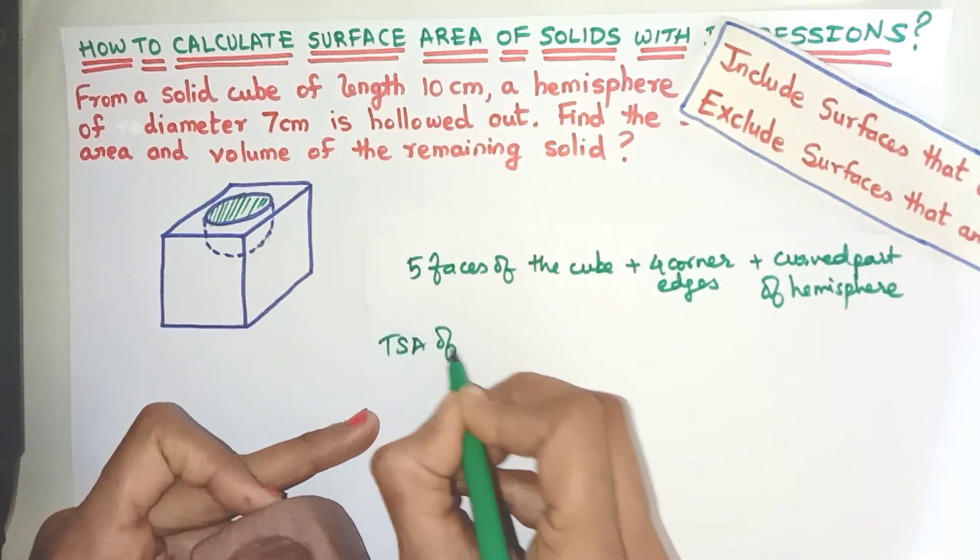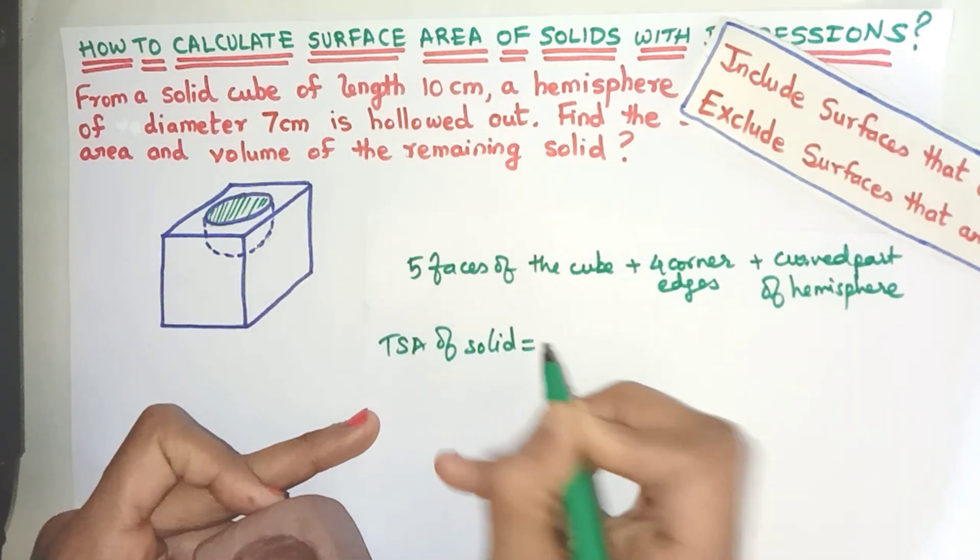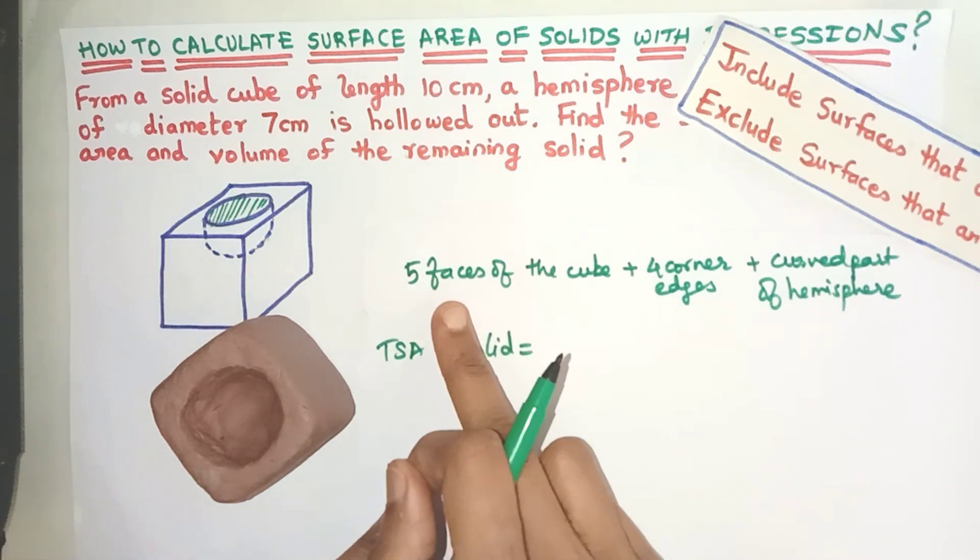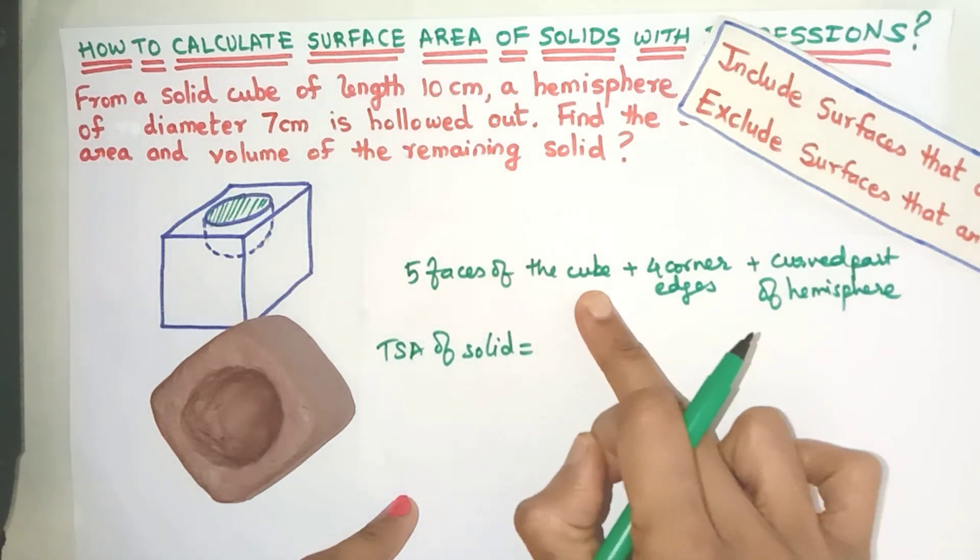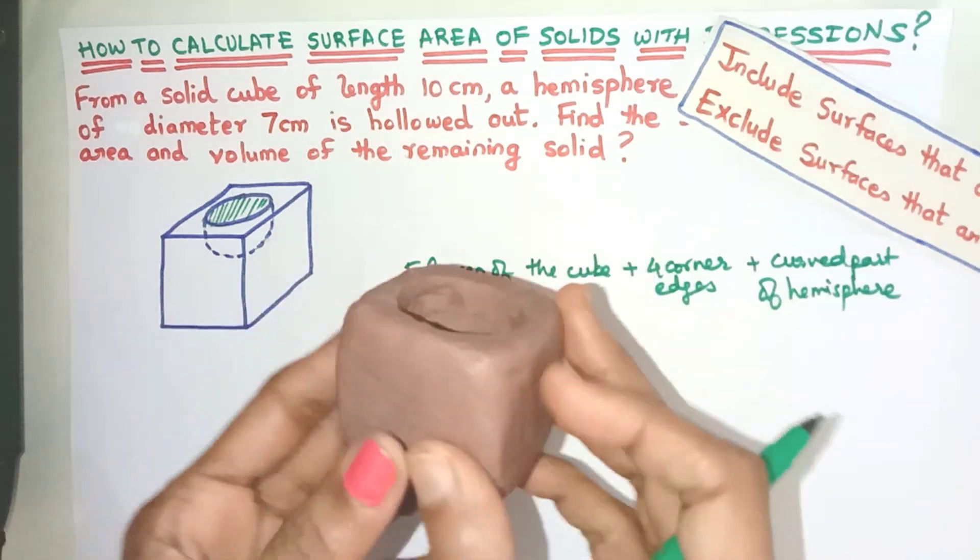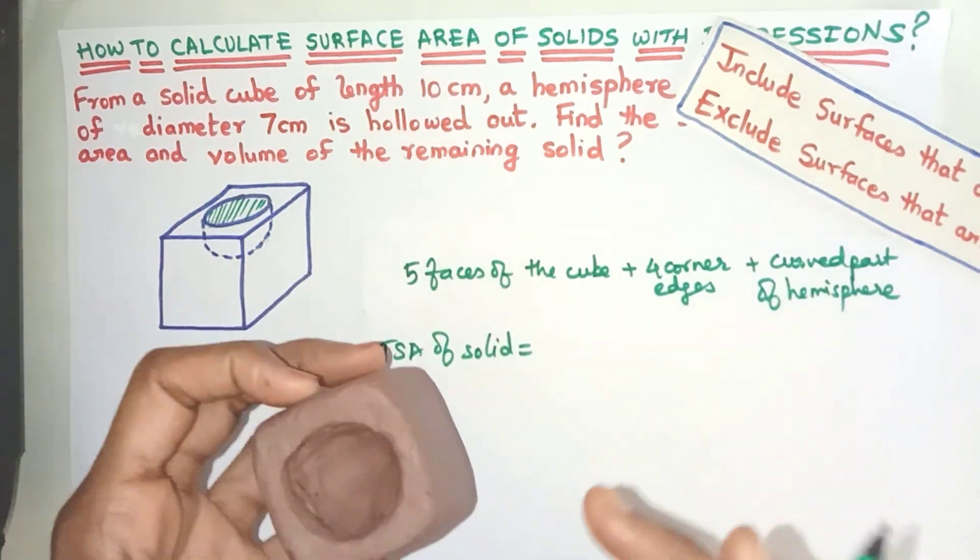So the total surface area of the solid we are going to find is equal to the five faces of the cube and the four corner edges. Now how are we going to find this surface area?